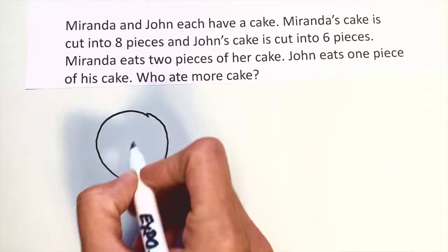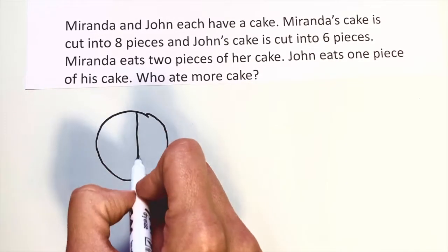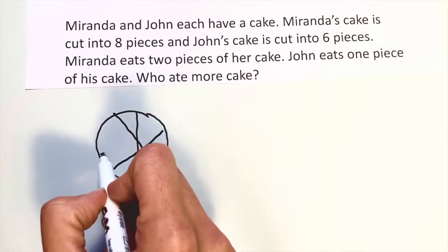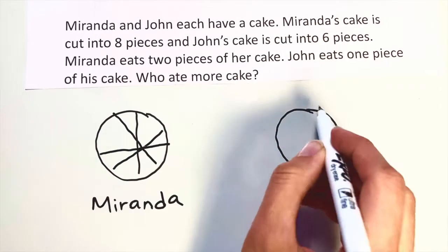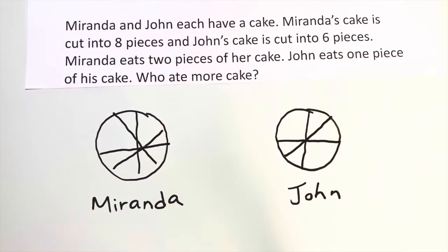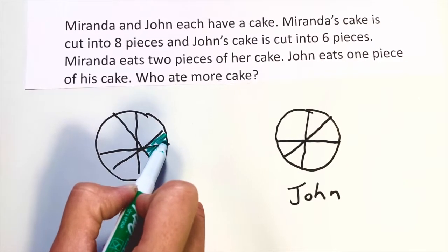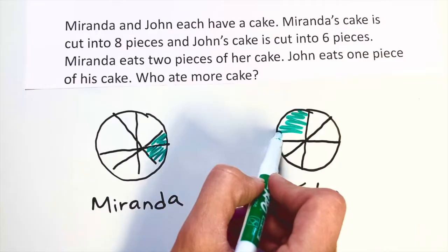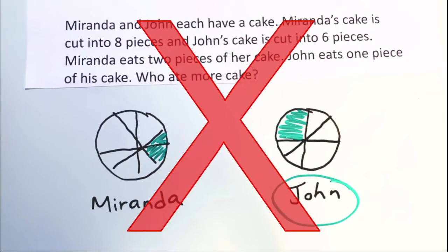Let's try drawing a circle to represent Miranda's cake. The problem says that Miranda's cake was cut into eight pieces, so I'm going to cut my circular cake into eight pieces. Now let's draw John's cake. John's cake was cut into six pieces, so let's cut that into six pieces. Miranda ate two pieces of her cake so I'll shade in two pieces, and John only ate one piece so I'll shade in one piece. It looks like John ate more cake. This is actually incorrect — I haven't drawn my pieces of cake the same size, so my picture has actually led me to the wrong answer.